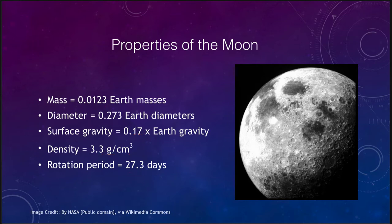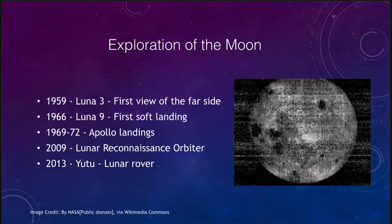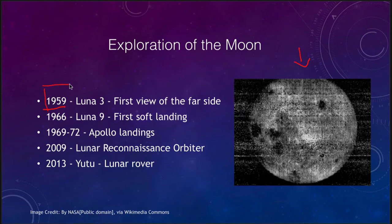The moon is the object we've been able to study for the longest time, but the far side of the moon was unknown because one side always faces us. It was not until 1959 that the Luna 3 probe brought back the first view of the far side, pictured here. It looks quite different from the near side — the near side is dominated by dark areas we call the Maria, while the far side has just a few darker areas and is mostly lighter. Until 1959 we did not even know what the far side looked like, which made this image amazing to astronomers at the time.